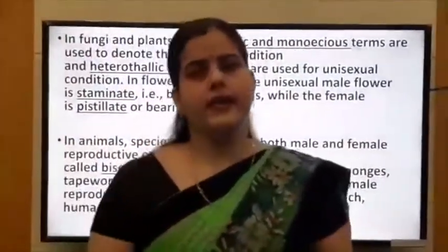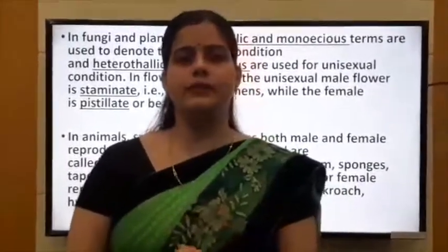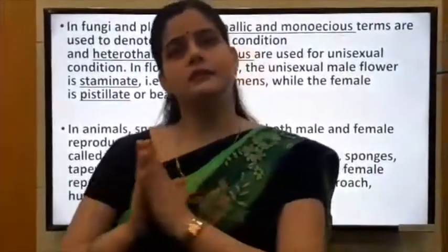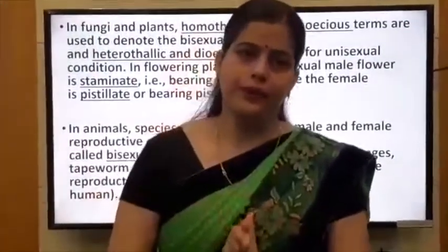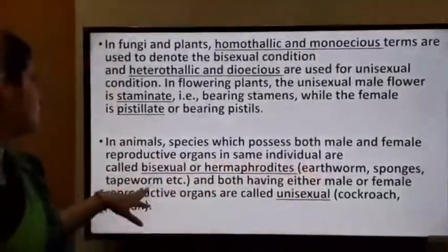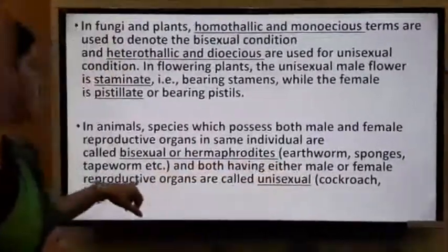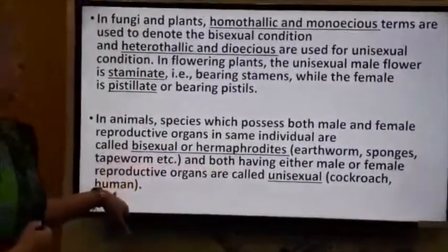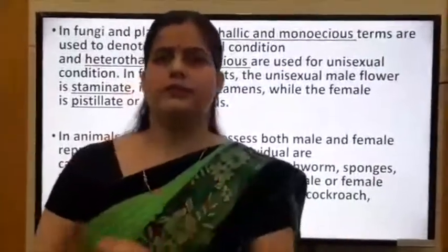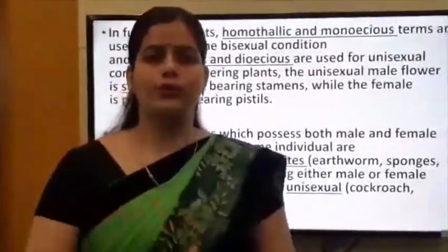Bisexual animals are also known as hermaphrodites — individuals having both male and female sex organs within a single body. Examples include earthworm, sponges, and tapeworm. Organisms having either male or female reproductive organs are called unisexual, for example humans and cockroach.